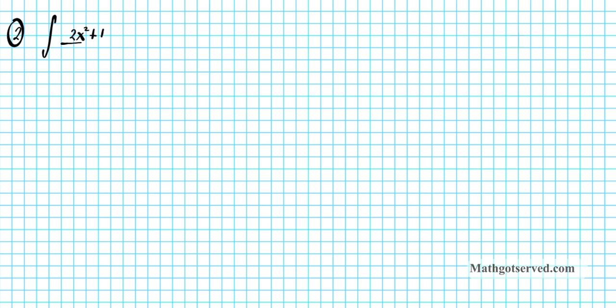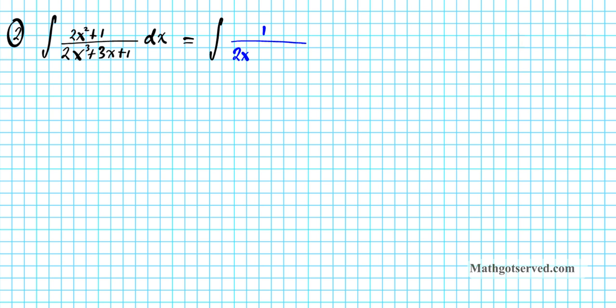Let's take a look at question number 2. We are to evaluate the indefinite integral of 2x squared plus 1 divided by 2x cubed plus 3x plus 1 dx. Is this a candidate for integration using u-substitution? To find out, we separate the two functions and write it as the integral of 1 over 2x cubed plus 3x plus 1, times 2x squared plus 1 dx.